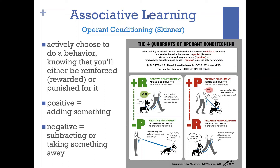Punishment is a little bit easier. Positive punishment means adding something you don't want as a form of punishment — like parents yelling at you with angry tones for bad grades. Negative punishment would be taking away something — they take away your phone because of your bad grades. That covers positive and negative reinforcement and punishment.